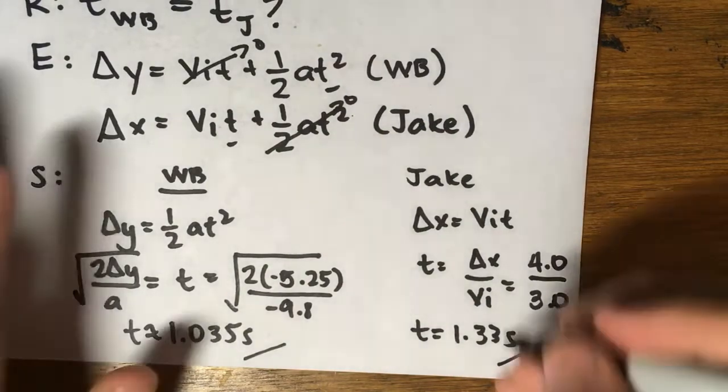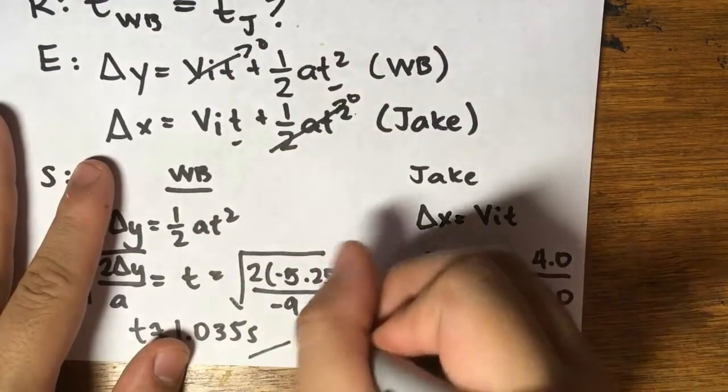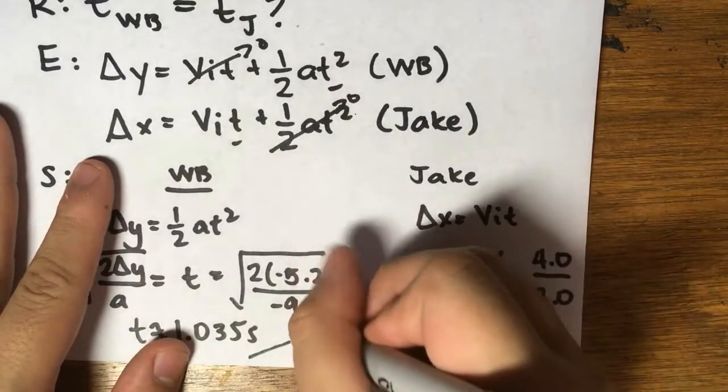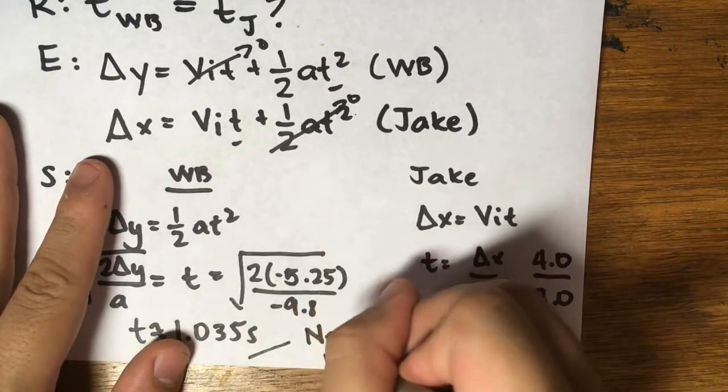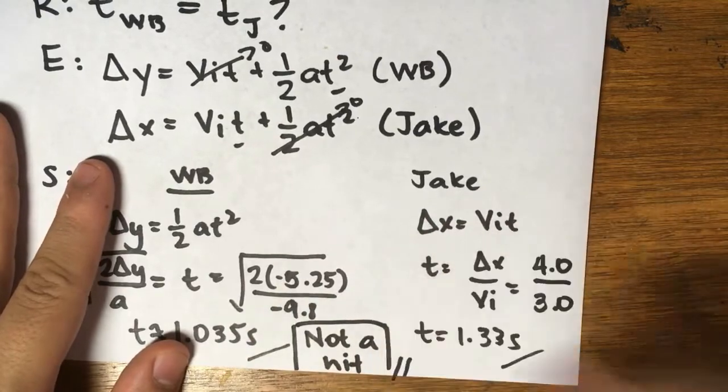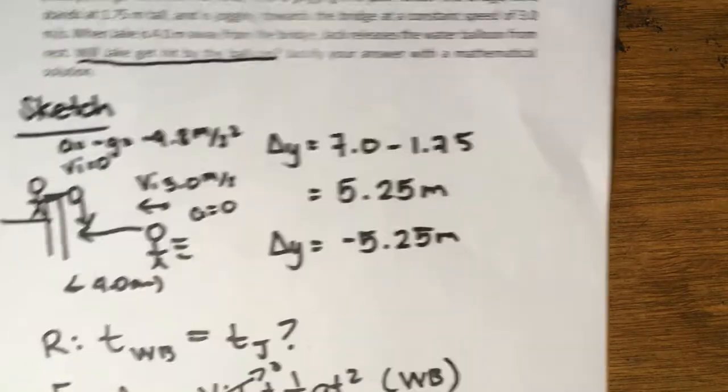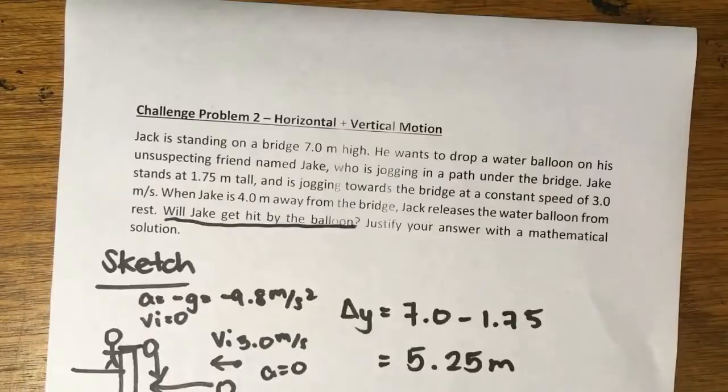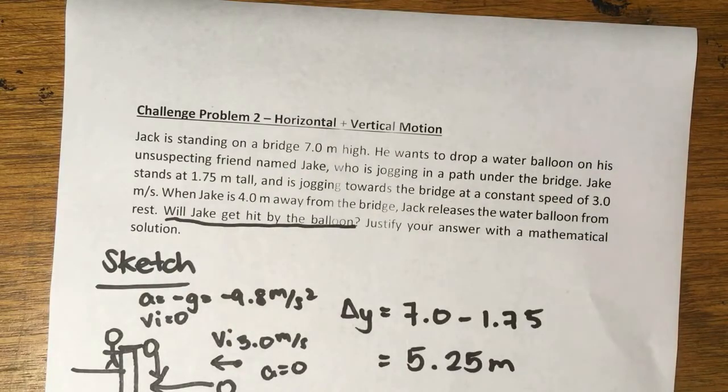Now let's compare. Your water balloon gets there in 1.035 seconds. Jake gets there in 1.33 seconds. So because they're not equal, we can assume that it was not a hit, and this is your final answer.